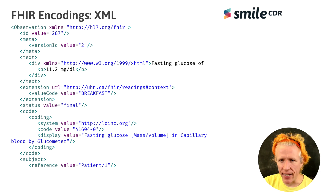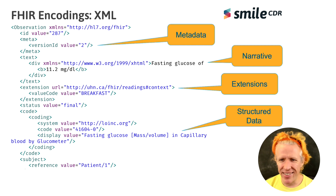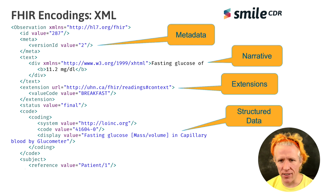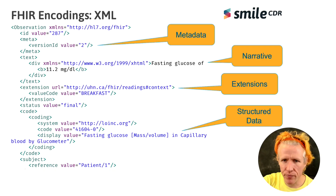Let's jump into XML for a second. This is the equivalent observation payload in XML. All of the same information is there, represented as XML. There are a couple of nuances — we've got a 'value' attribute that doesn't exist in JSON — but by and large the element names are the same, the order is the same, and the structure is the same. Things are fairly similar in XML to how they were in the JSON version.